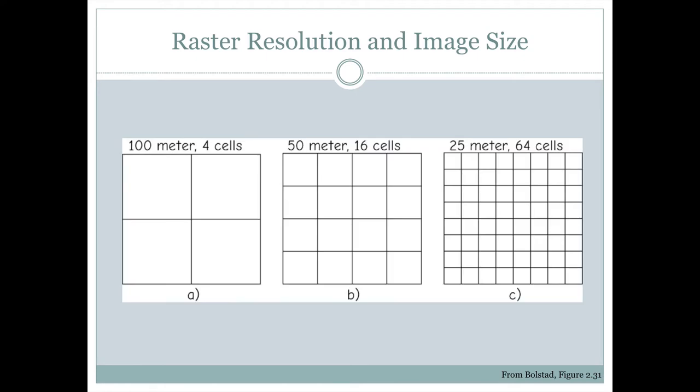And one thing to remember with these is that as we change the resolution, we also change the number of cells associated with it. So in this example here, we're seeing the same area in all three of these. The first one covers it with four cells, each of which are 100 meters by 100 meters.